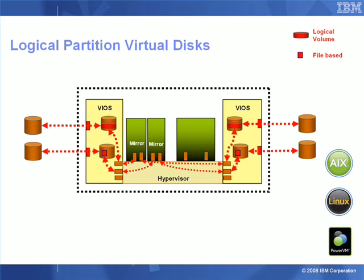We may want to make sure that we have disk protection. If these are simple SCSI disks, one way of doing that is to have two VIO servers with matching pairs of either logical volumes or file-based virtual disks. Then the client logical partition can mirror between the two VIO servers — the two logical volumes or files — out onto two separate different disks.